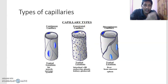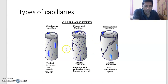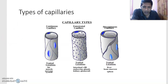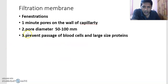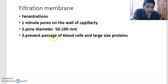Just like a filter candle which has many small pores, the fenestrated capillary has many pores for filtration. Fenestrations are minute pores in the wall of the capillary. Their pore diameter is 70–100 nanometers (micrometers, not millimeters). These fenestrations prevent the passage of blood cells and large-size proteins — they do not allow blood cells or large proteins to pass through.